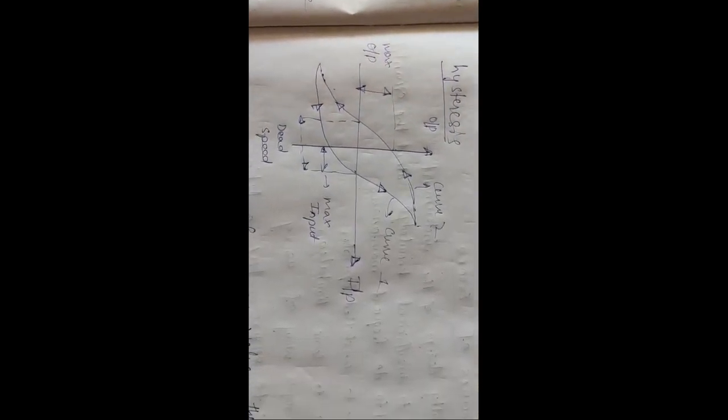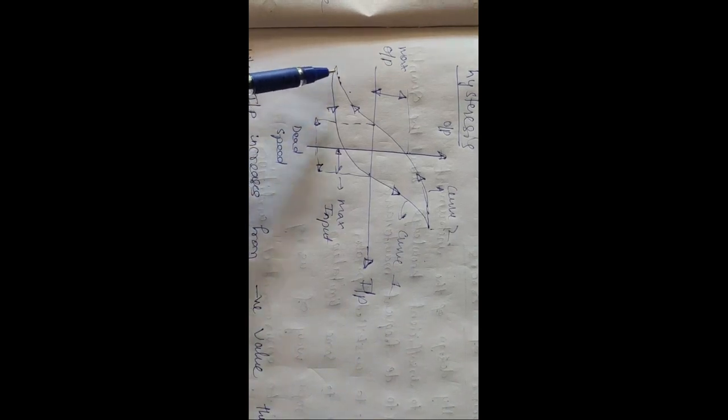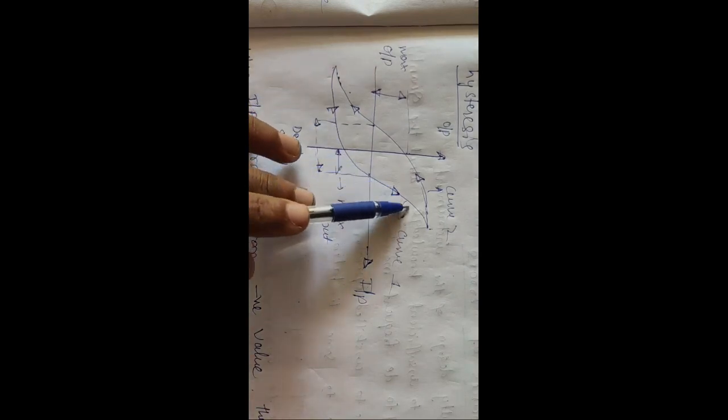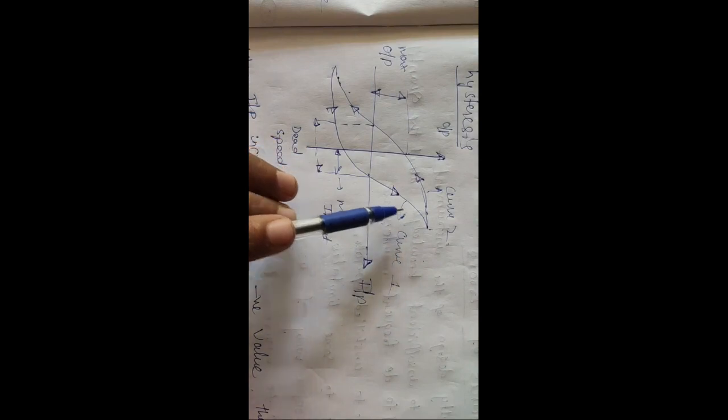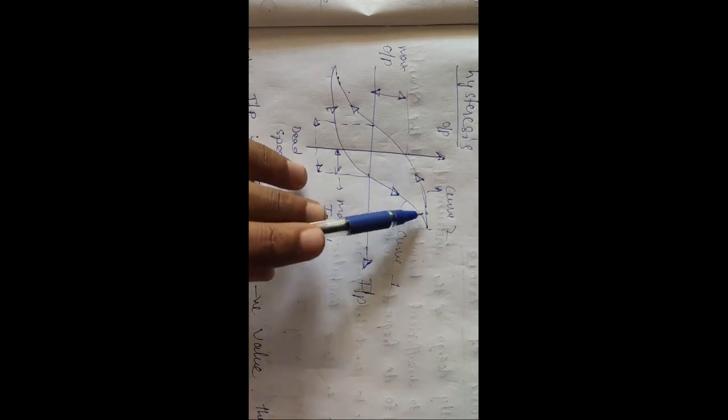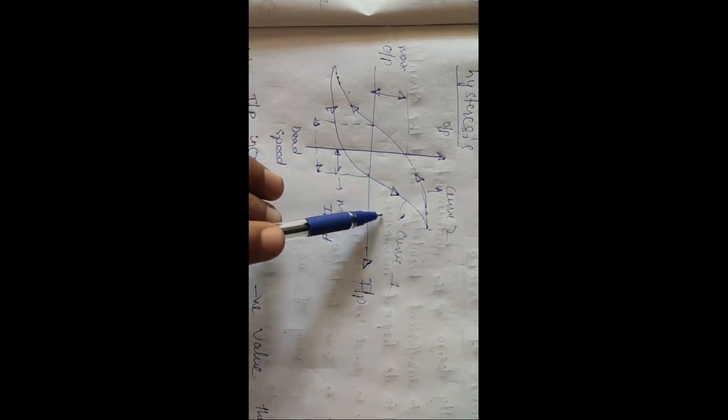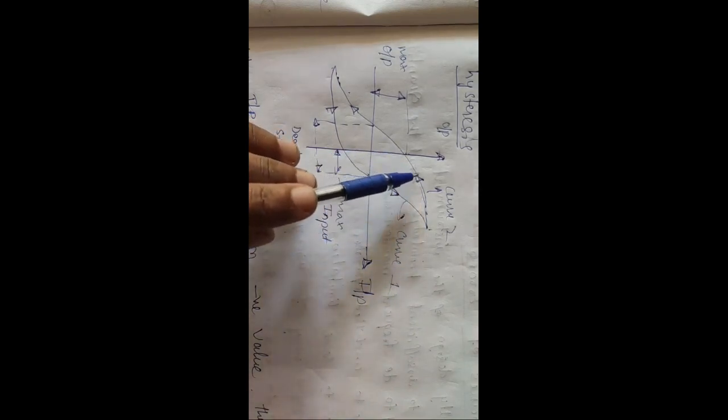The next one is hysteresis. Here on the graph, the x-axis is your input and y-axis is your output. When the input starts increasing from the negative side, that is the first curve — as input goes from negative to positive, output is also increasing. In the second curve, the input is increasing but the output starts decreasing. This curve is called the hysteresis curve.